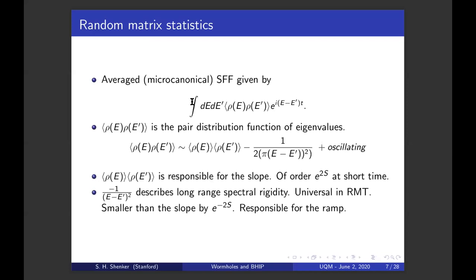You can think of the average microcanonical spectral form factor as the Fourier transform of the density pair correlation function, the density of energy eigenvalues. You can write this calculating it in random matrix theory. It's a disconnected part, which is responsible for the slope. Now densities are of order the number of states, which is like e to the entropy. So this thing is of order e to the two s, at least at early time before it starts decaying seriously. This part here, one over the energy difference squared, describes what's called long range spectral rigidity, the phonons in the Dyson gas of energy eigenvalues.